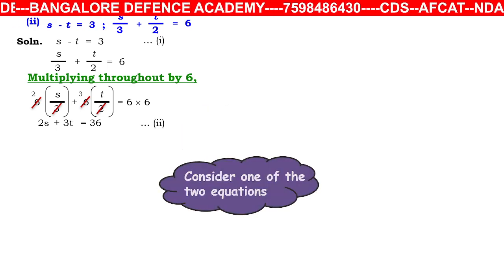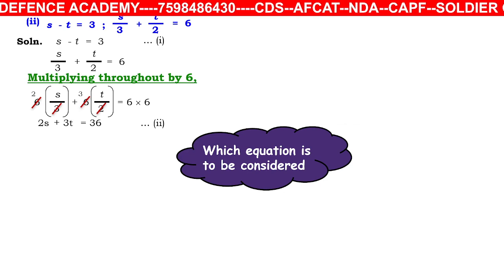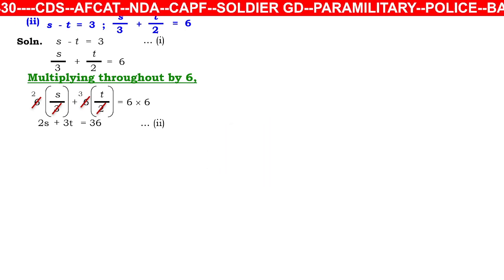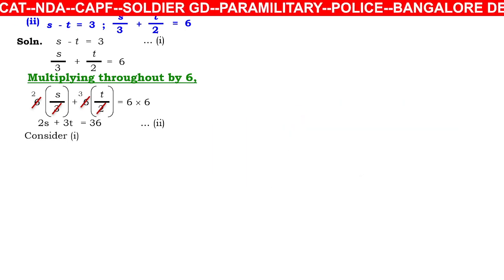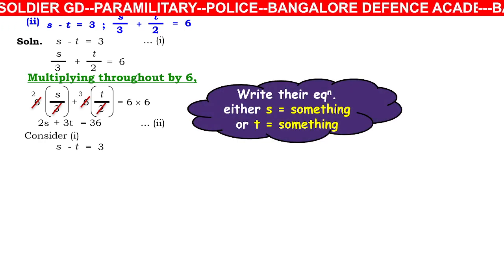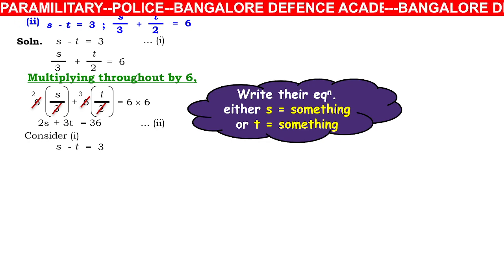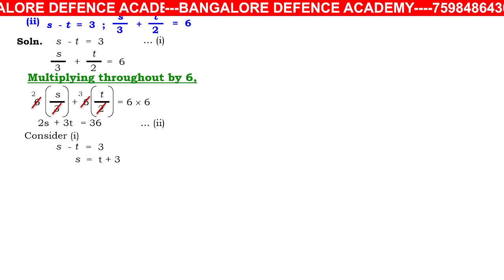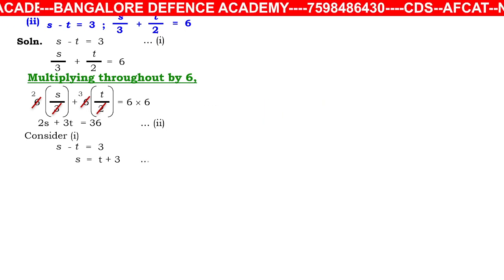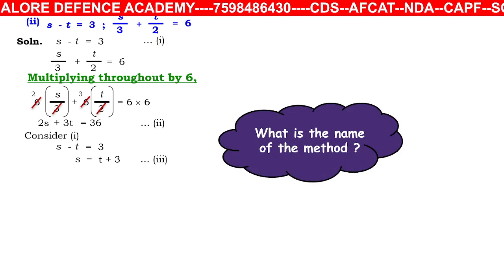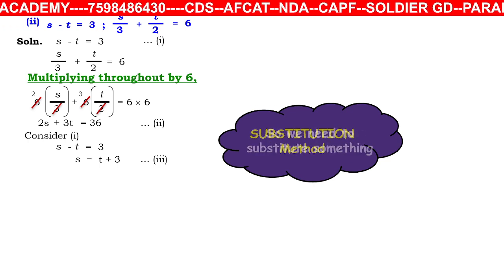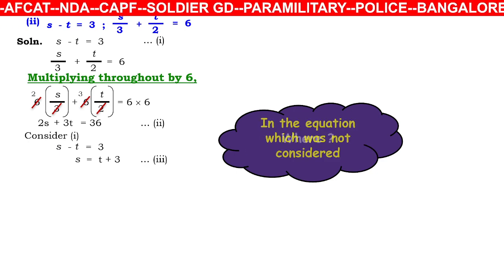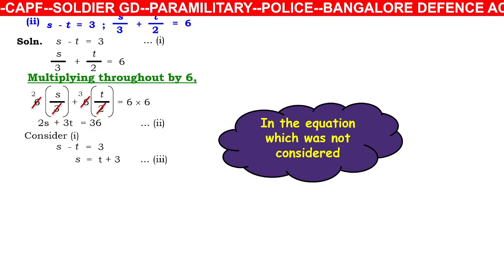Consider the simpler equation 1: s − t = 3. Write it as s = t + 3 — call this equation 3. By the substitution method, substitute equation 3 into equation 2 (the equation not considered).